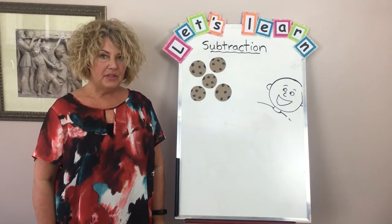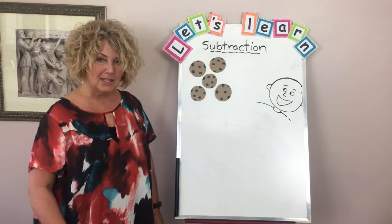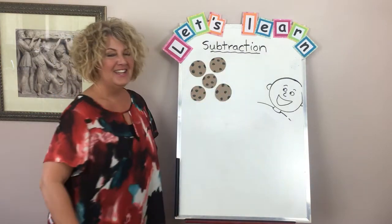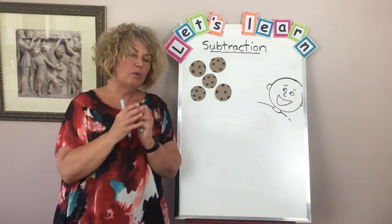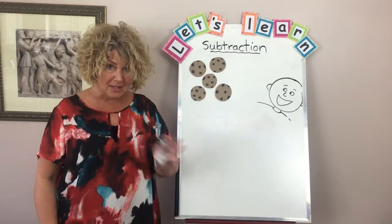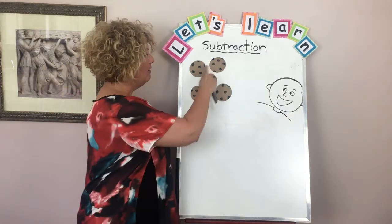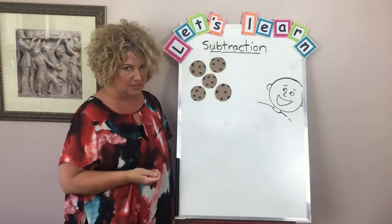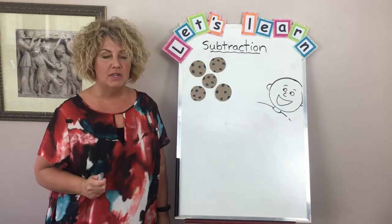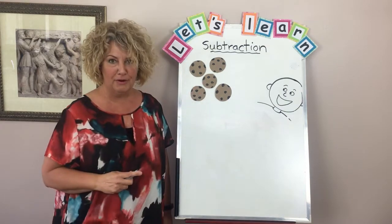Hi friends! For math this week we're going to talk about subtraction. That's a long fancy word — subtraction. Subtraction is where you start with one number and you take some of it away so you end up with another number. It's a lot of fun, and to help us with our subtraction lesson today I have five chocolate chip cookies over here and a picture of Mr. Visconti, because he really likes chocolate chip cookies and he's going to be stealing some of our cookies.